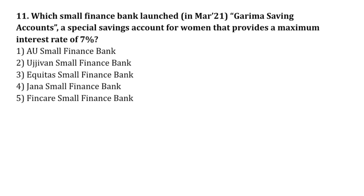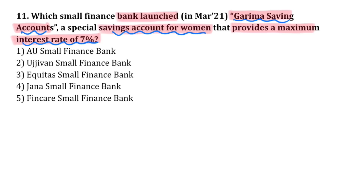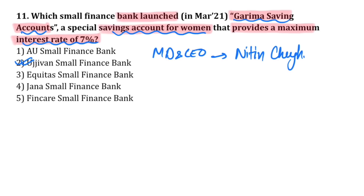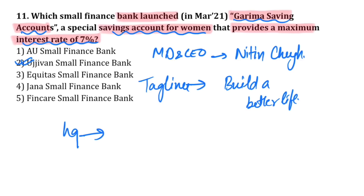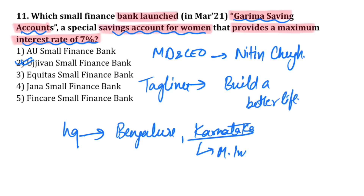Which small finance bank launched Garima Saving Accounts — a special savings account for women providing a maximum interest rate of 7%? It is the Ujivan Small Finance Bank. The MD and CEO is Nitin Chugh. The tagline is 'Build a Better Life,' and the headquarter is in Bangalore, Karnataka — the most innovative state.